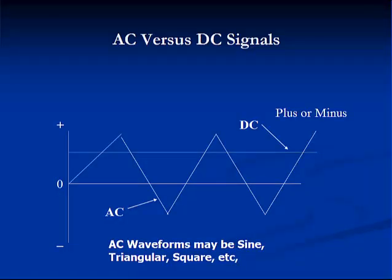There are two distinct types of electrical current: DC, or direct current, and AC, or alternating current. In direct current, an electrical charge flows steadily in one direction over a conductor. In alternating current, an electrical charge flows alternately positive, then negative.